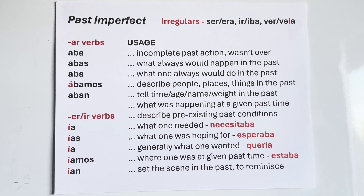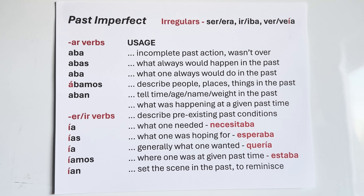The past imperfect, though, is for an incomplete past action. Basically, when you refer to an action in the past, if the action was still happening when you referred to it, you're going to use the past imperfect because it is incomplete. That probably doesn't make a lot of sense to you yet — we're going to go through the usage as you see pointed out here on the sheet momentarily.